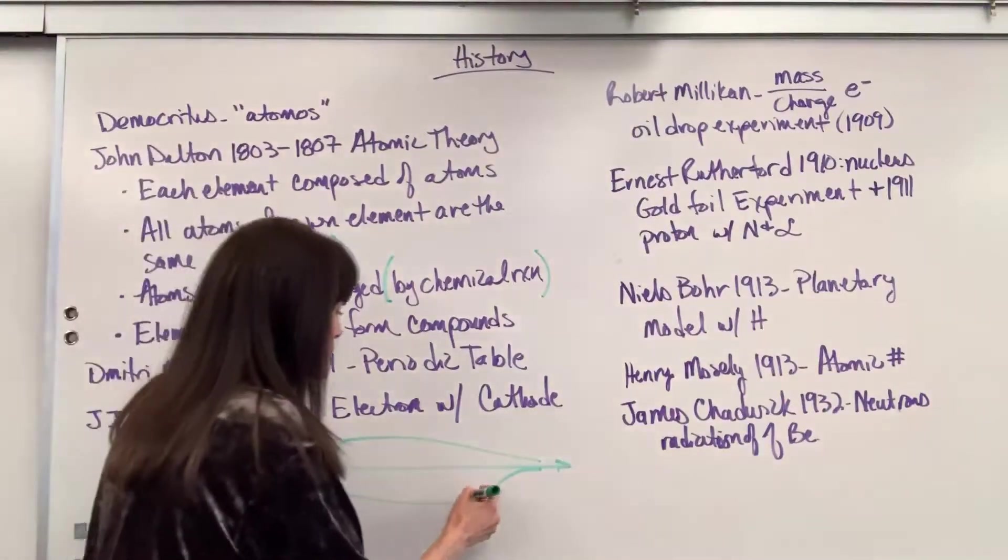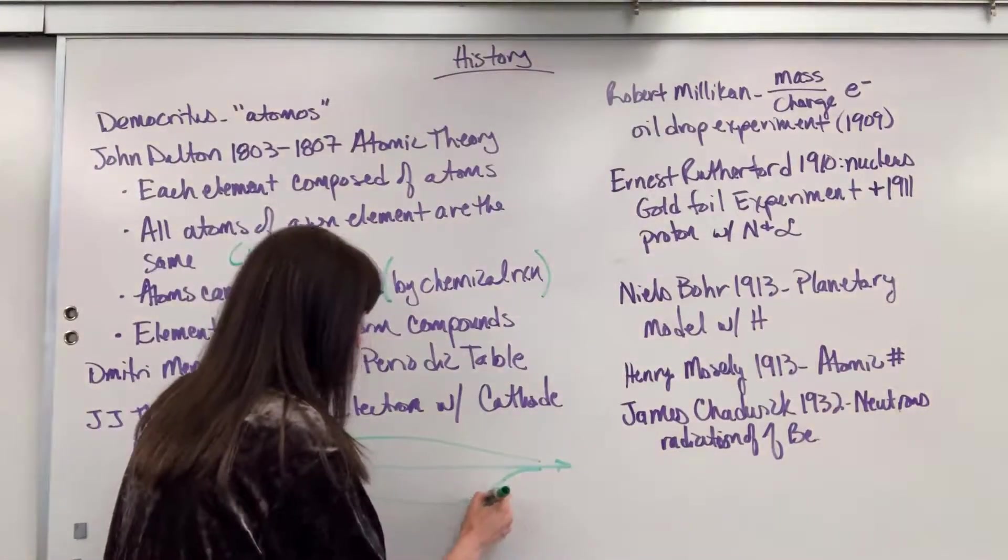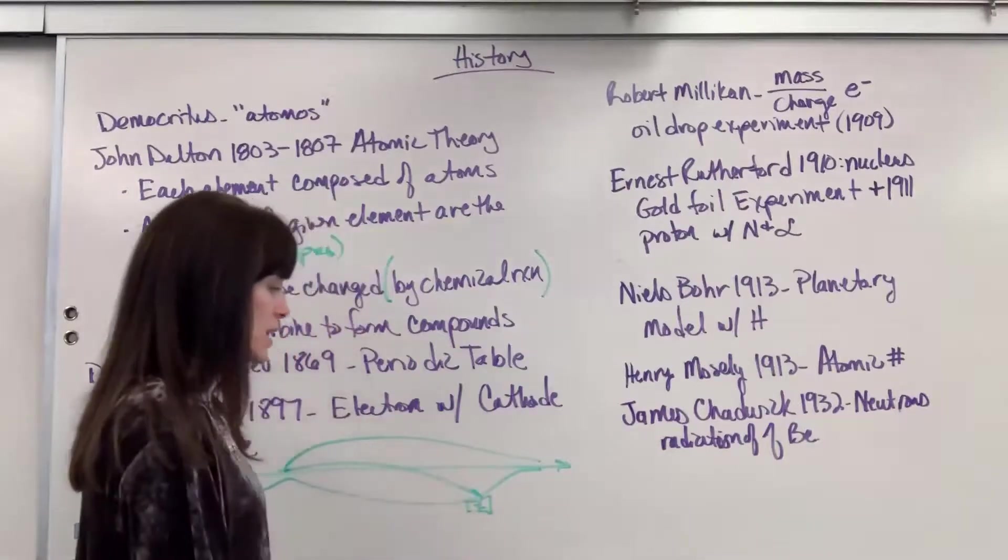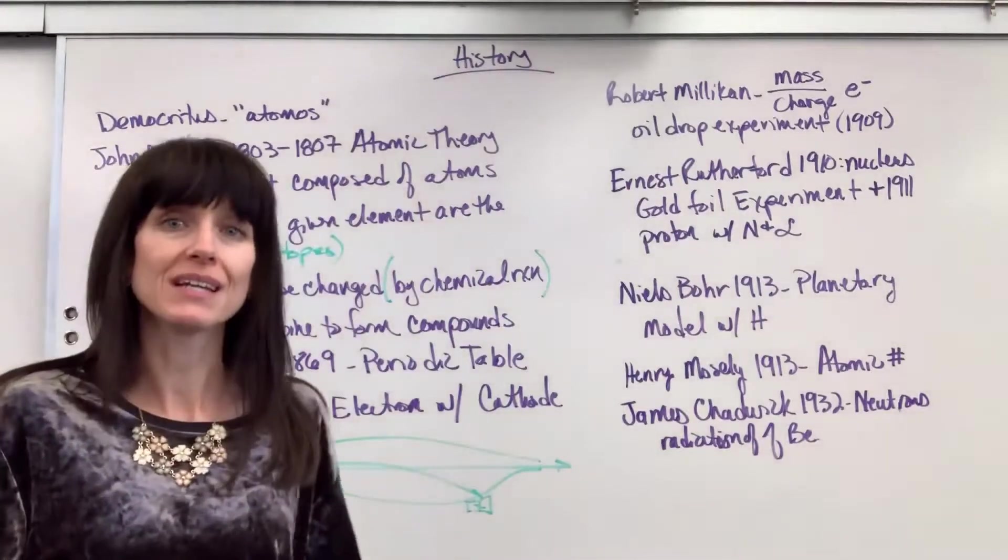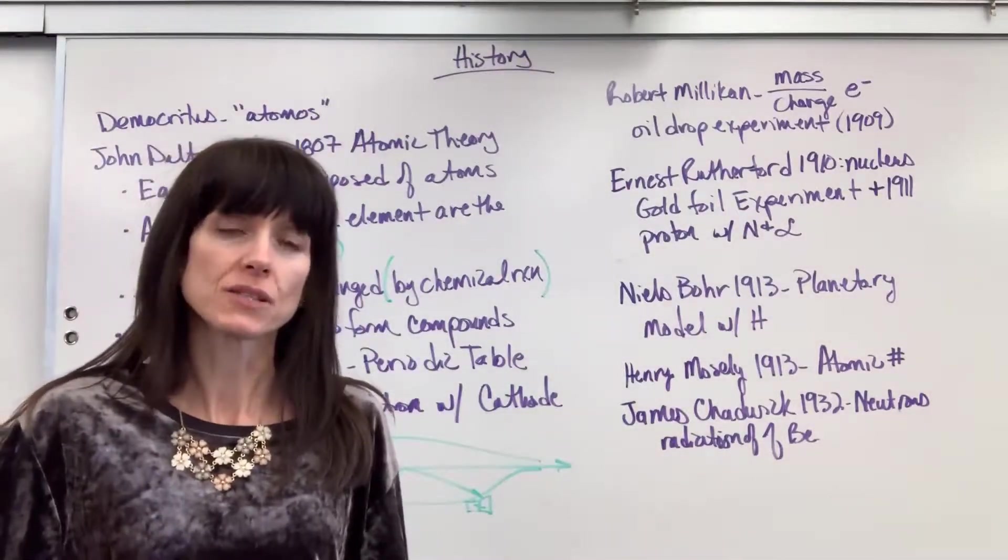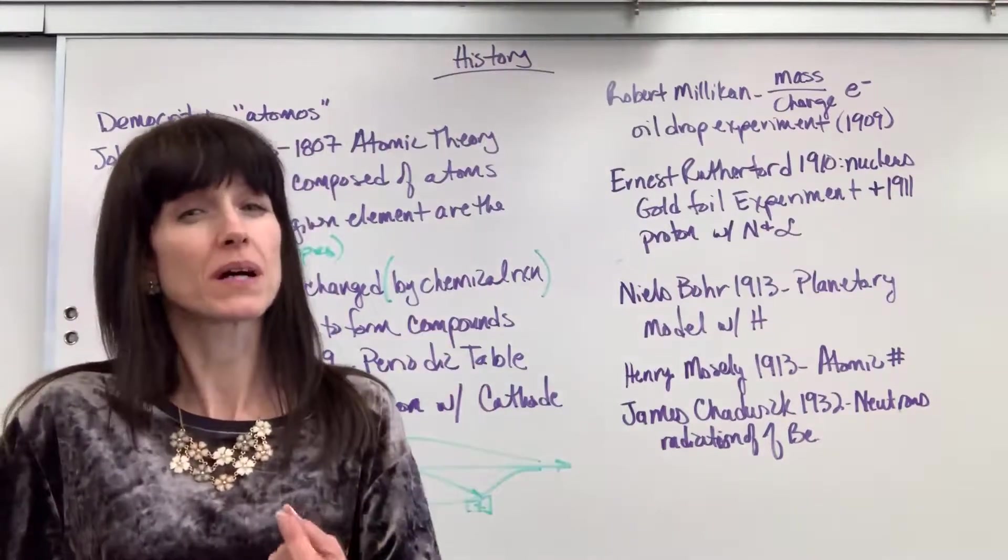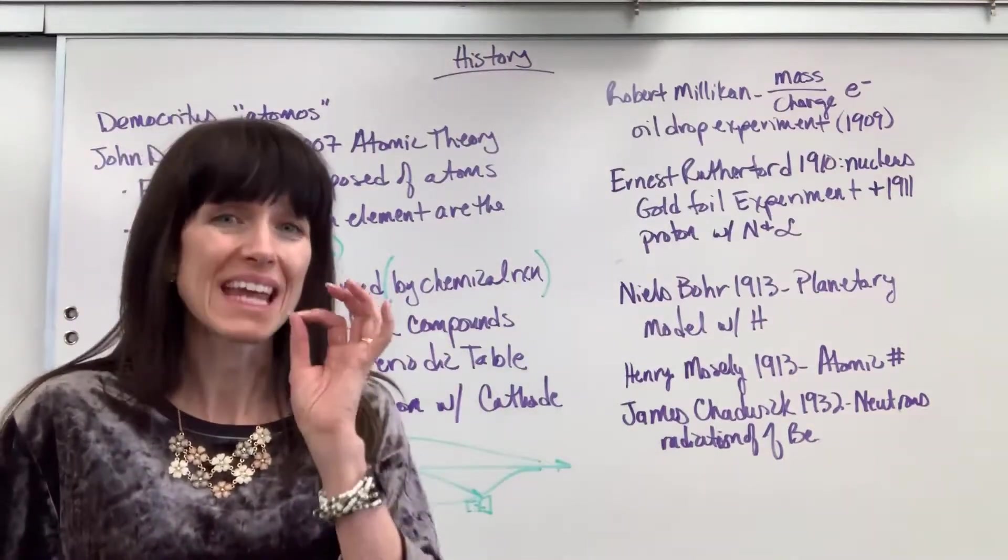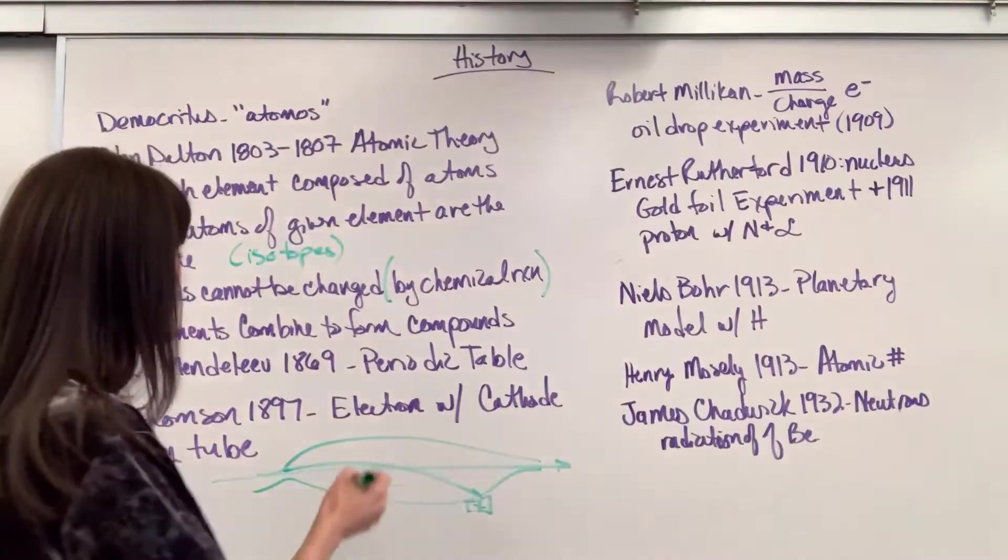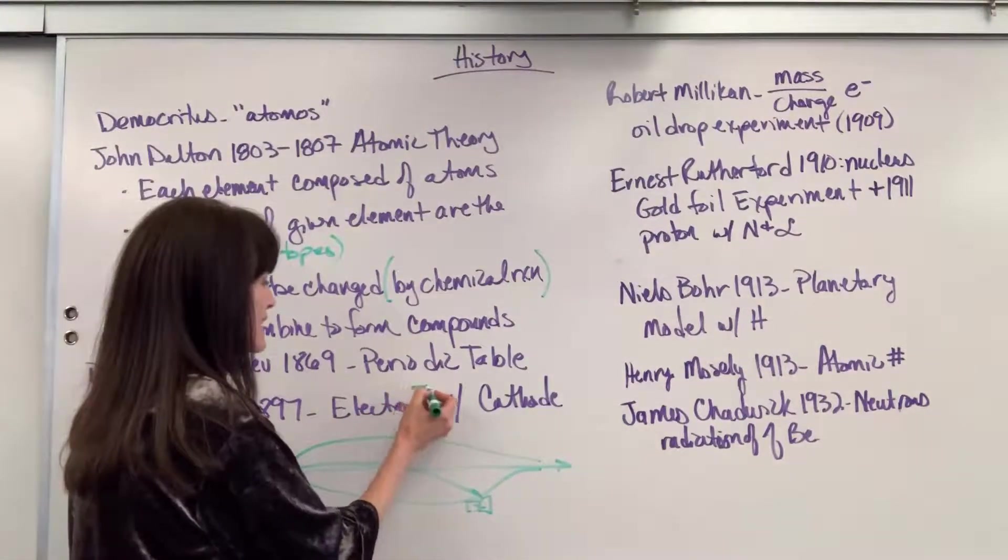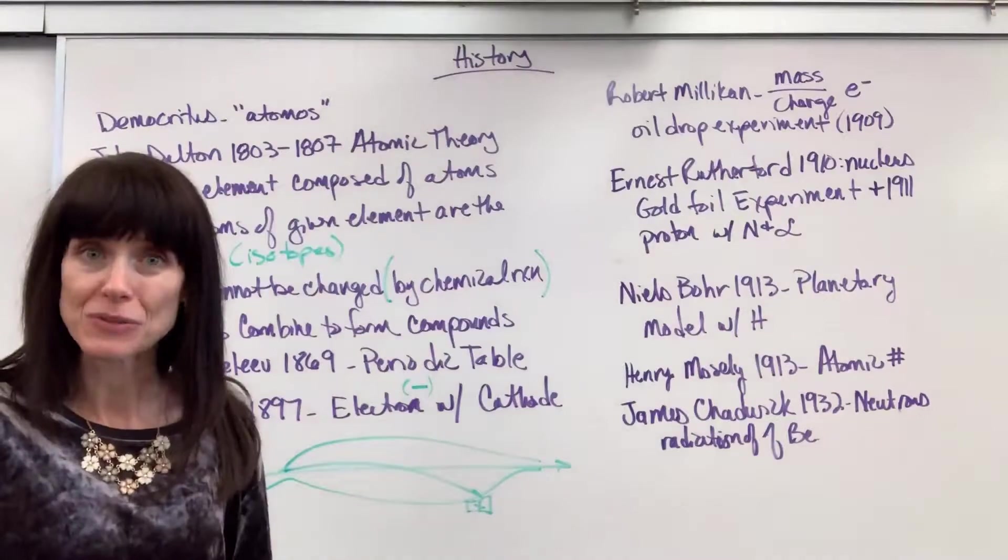He shot a ray through this tube, and what he discovered is that he could bend the ray with magnets. So, if he put a positive magnet right here, this ray would attract to it. If there was a negative magnet, it would deflect. So, what he deduced from this is that there must be a particle inside the atom that has a negative charge. That was the electron.